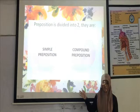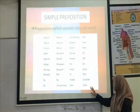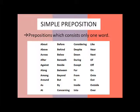The preposition is divided into two. The first is simple preposition and the second is compound preposition. The simple preposition is a preposition which contains only one word. Here are the examples: about, move, until, over.